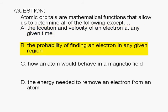B, the probability of finding an electron in any given region, C, how an atom would behave in a magnetic field, or D, the energy needed to remove an electron from an atom.